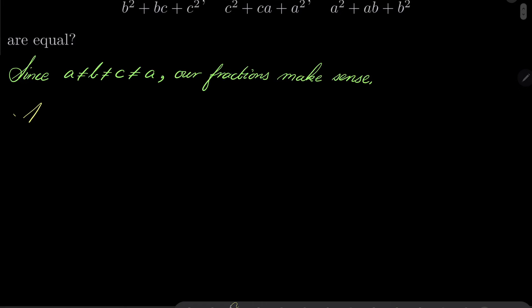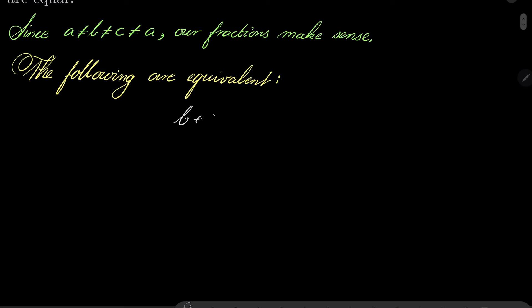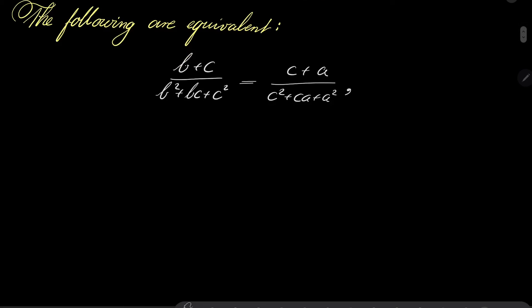And now let's notice that the following equations are equivalent. For example, let's take our first equation: (b + c)/(b² + bc + c²) = (c + a)/(c² + ca + a²). Let's multiply by the denominators and we have (b + c)(c² + ca + a²) = (c + a)(b² + bc + c²).